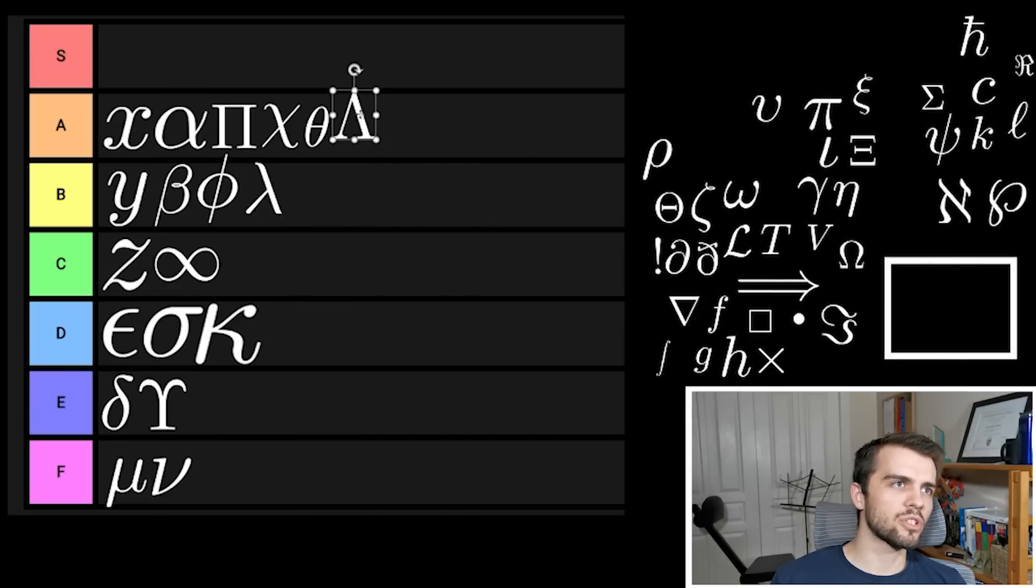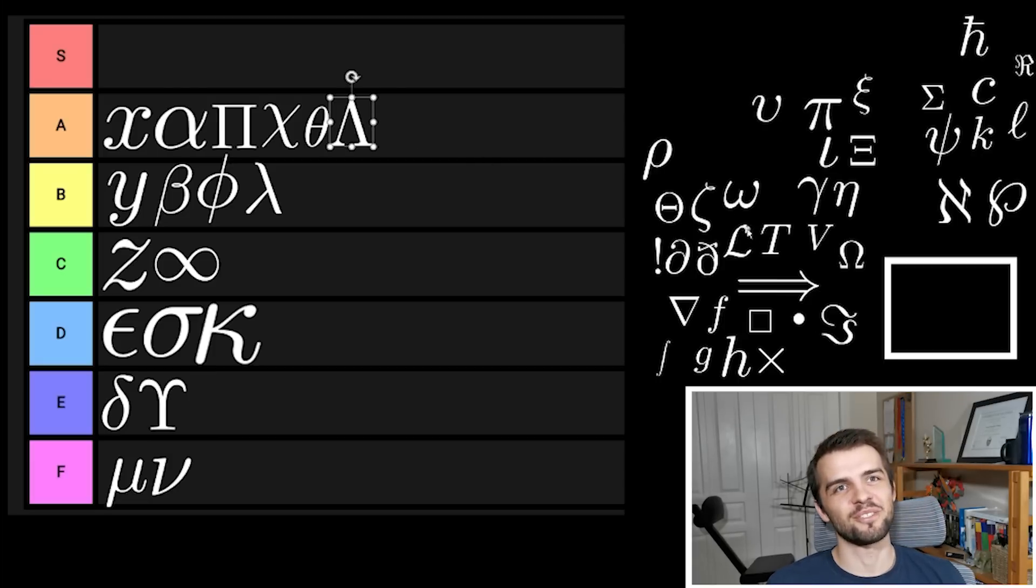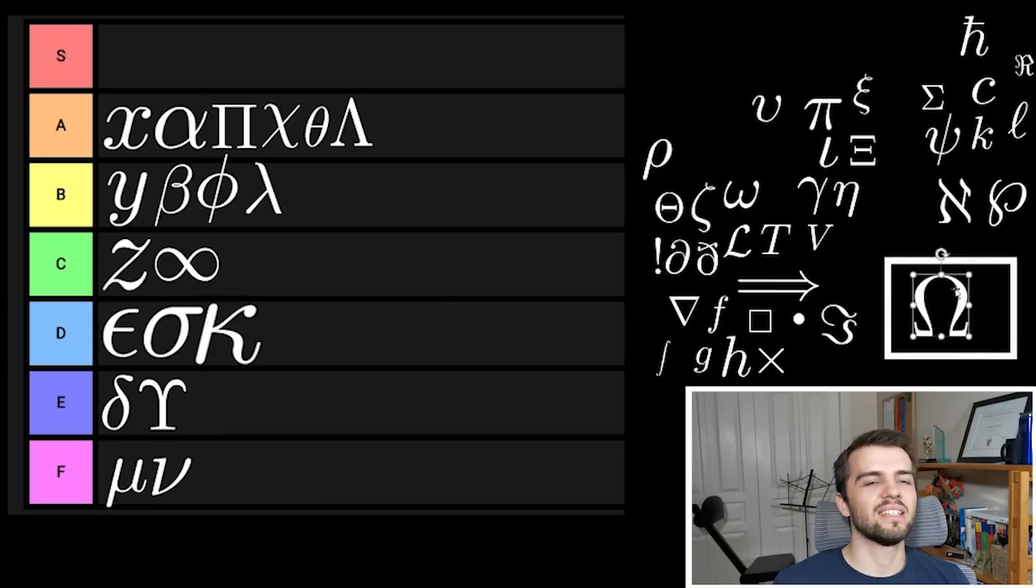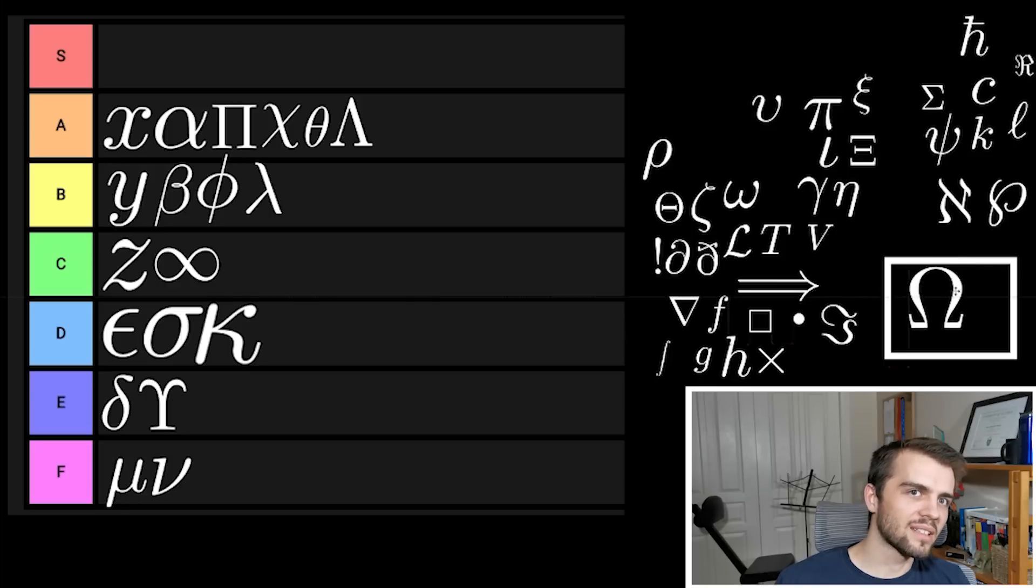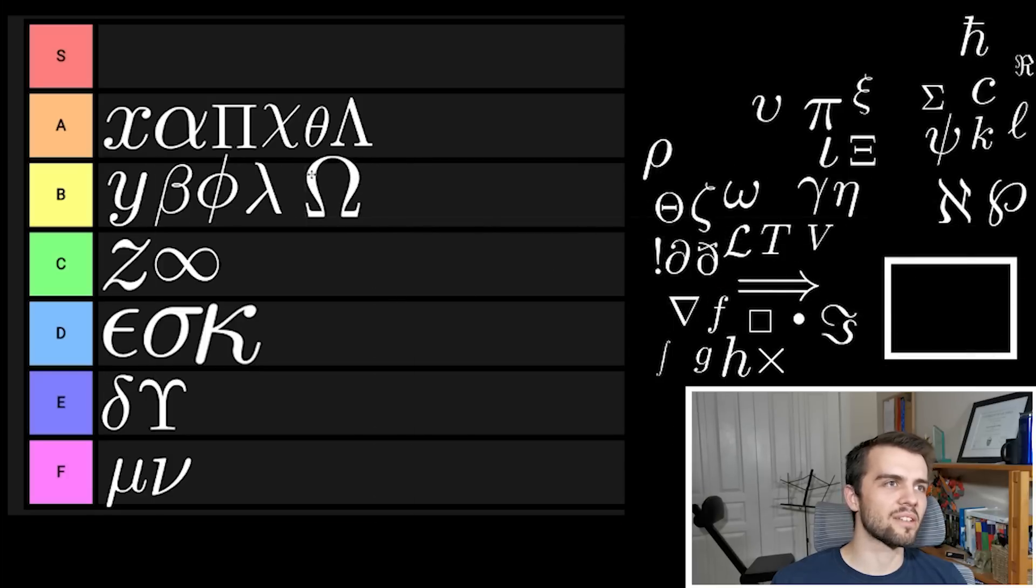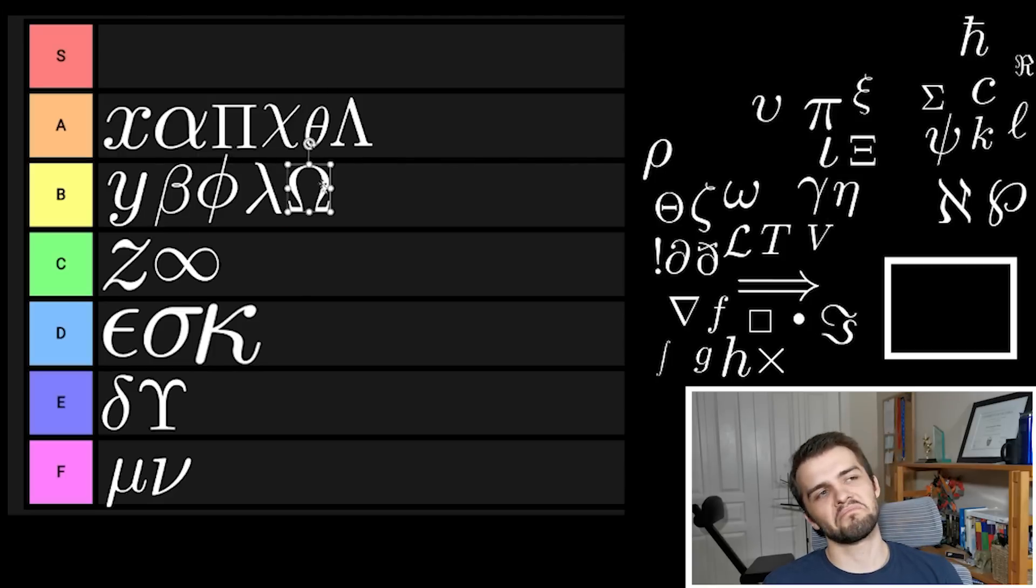Omega is a really cool looking symbol, especially in LaTeX. It's got that horseshoe vibe, kind of a mysterious support arch vibe. I'm going to put it B tier, but probably B tier just because it's not used very often. I wouldn't even use it really.